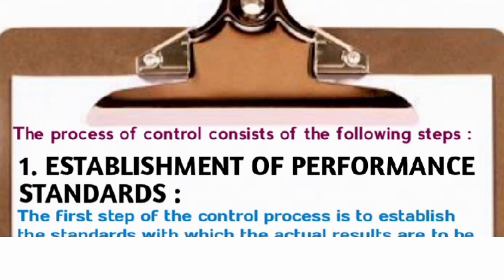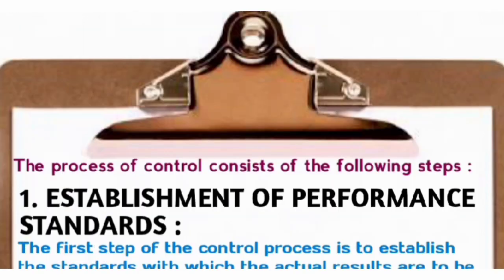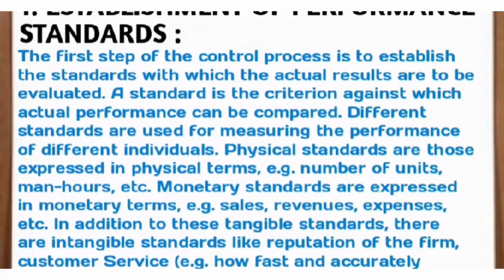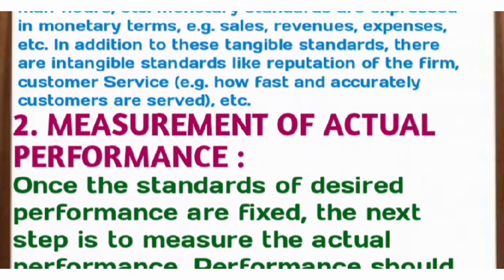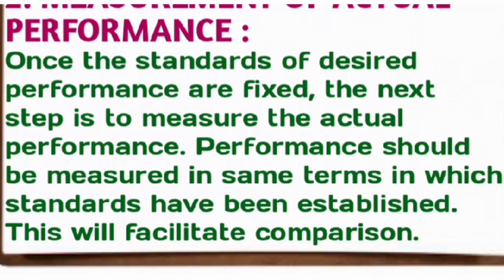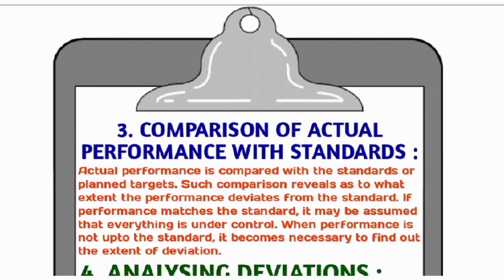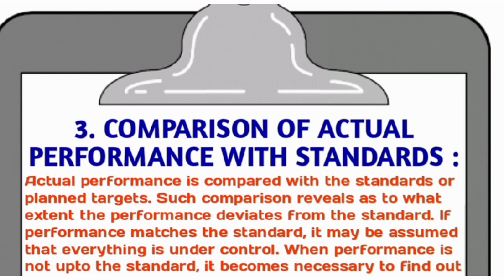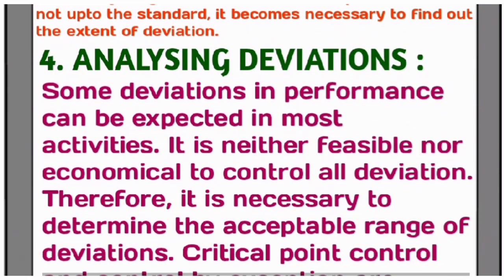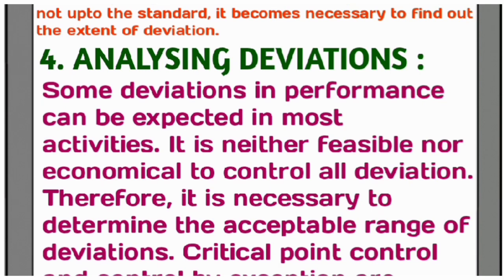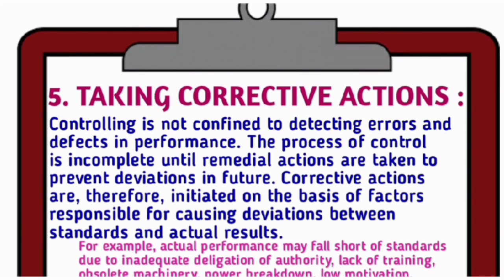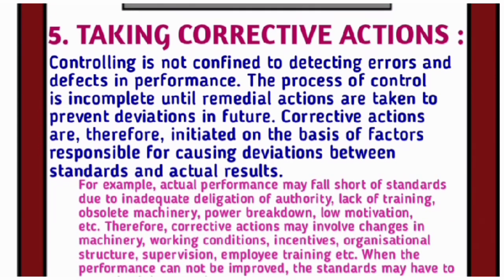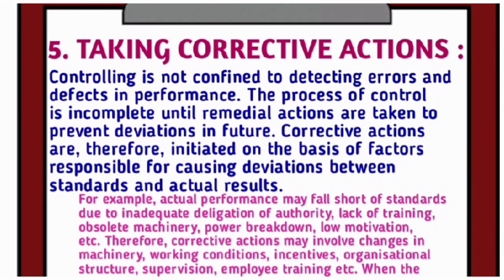To summarize, the five steps in the process of controlling are: Number 1 — Establishment of Performance Standards; Number 2 — Measurement of Actual Performance; Number 3 — Comparison of Actual Performance with Standards; Number 4 — Analyzing Deviations; and Number 5 — Taking Corrective Actions to fix the errors identified. These are the five steps in the process of controlling.